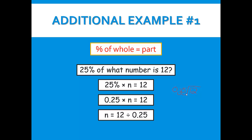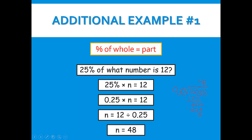We'll move our decimal two places — 1, 2 — and do the same for 12 — 1, 2. Now we divide. 25 will not go into 1, and 25 will not go into 12. So we divide 25 into 120. 25 goes into 120 four times, and 4 times 25 is 100. We subtract and get 20. We bring down our zero, and 25 goes into 200 eight times. 8 times 25 is 200. We subtract and get zero. So our answer is 48 — n equals 48.